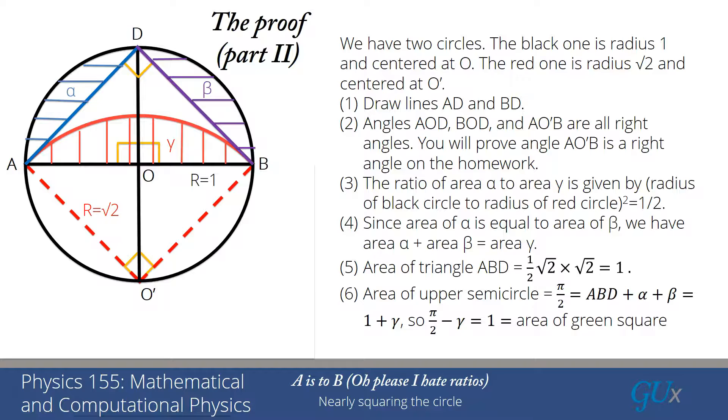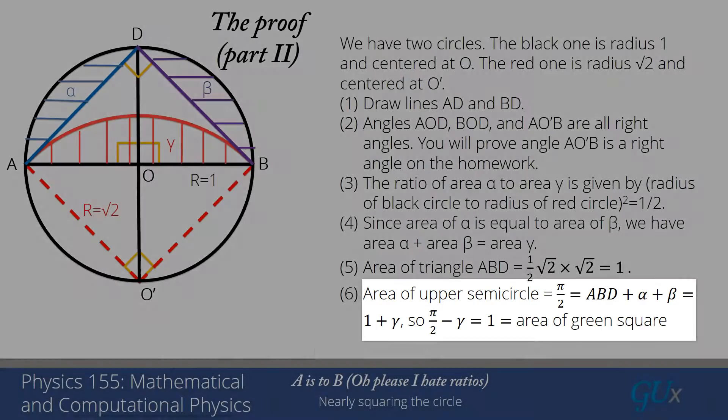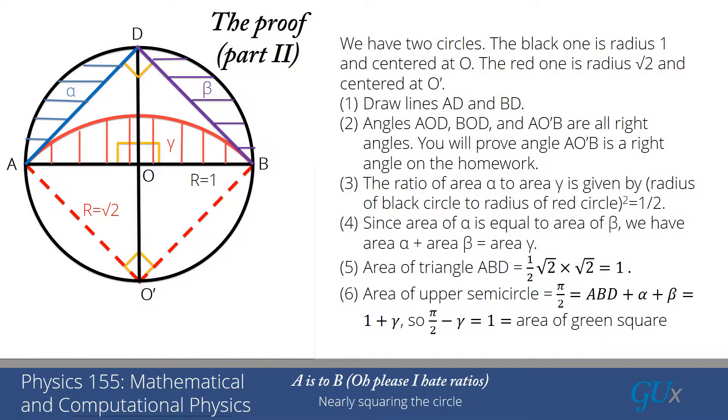But triangle ABD has area 1 and alpha plus beta has area gamma. So we learned pi over 2 is equal to 1 plus gamma, or pi over 2 minus gamma, which is going to be the area between the two circles, is equal to 1. And that is indeed the area of the square because the edge of the square was equal to 1.